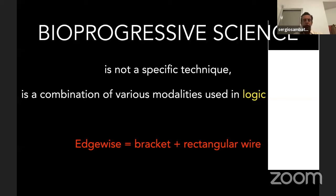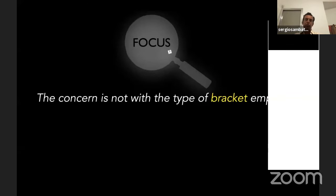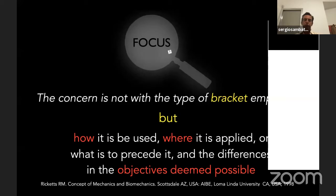We all use edgewise — bracket plus rectangular wire — but the focus is not the type of bracket employed. The difference lies in how it is used, where it is applied, what is to precede it, and the difference in objectives deemed possible.